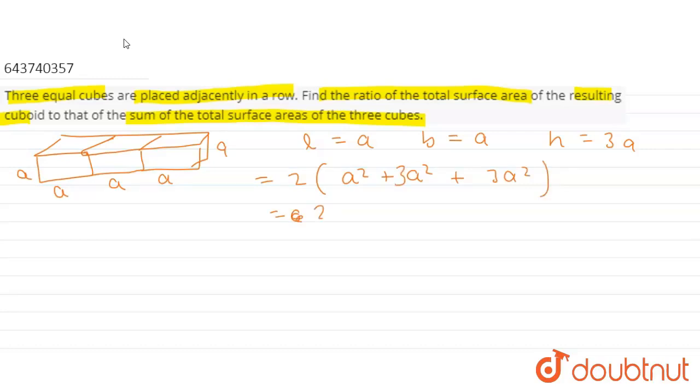Which is equal to 2 times of A square plus 6A square which is equal to 14A square.